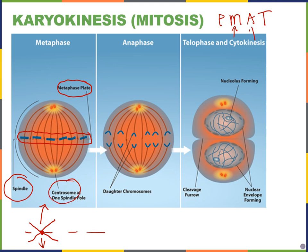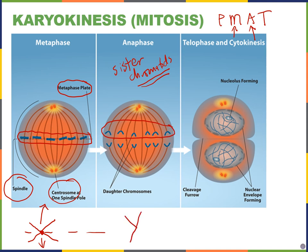In anaphase, the sister chromatids are pulled apart and separated. Each chromatid is now called a chromosome. Remember, this was one chromosome, and this was one chromosome plus its copy. After anaphase, one chromosome ends up in one cell, and the other ends up in the other cell.